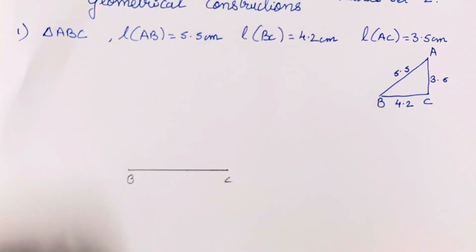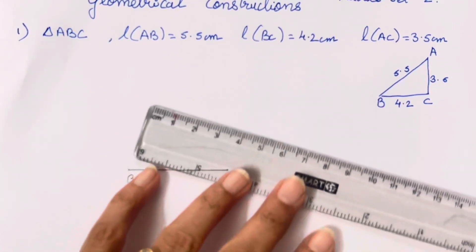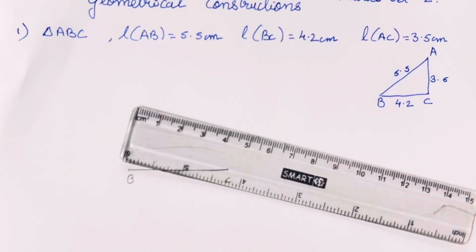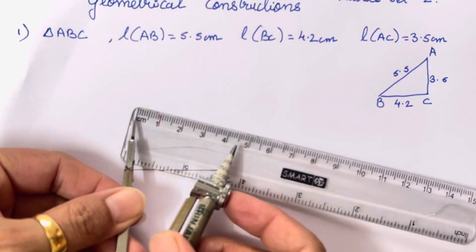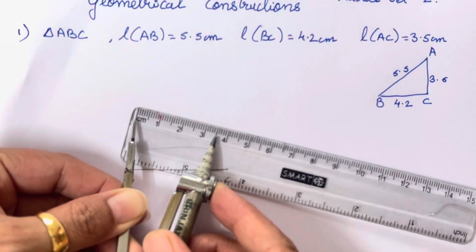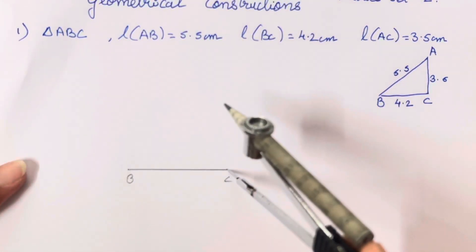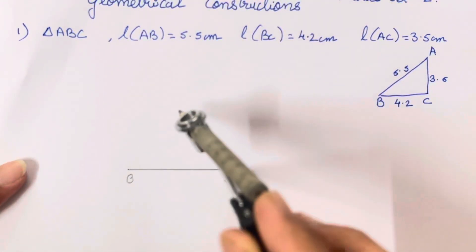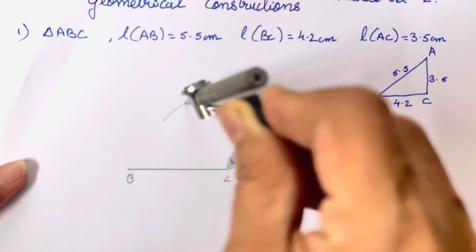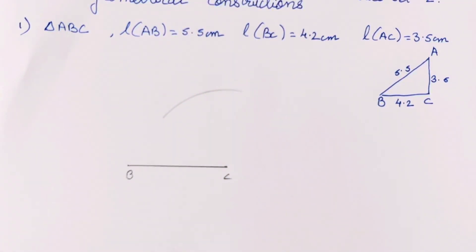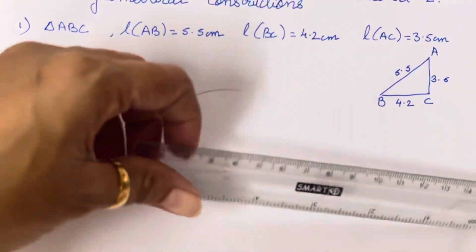After that, you will have to use a scale and a rounder to measure 3.5 cm. So 3.5 will come in this way. I hope it is clear to everyone. Now we will draw an arc in this way. Try to draw an arc in one go — don't scratch it.